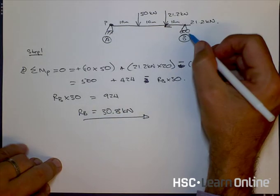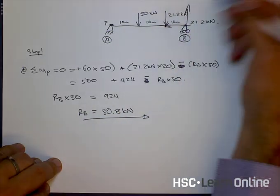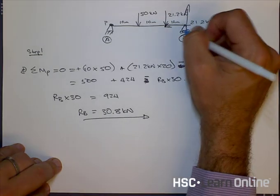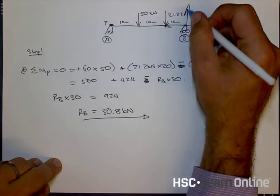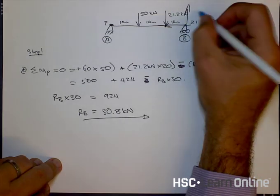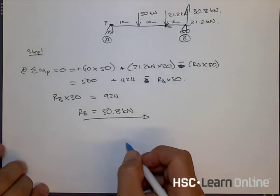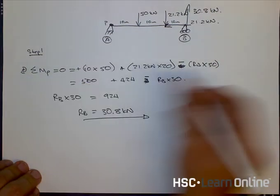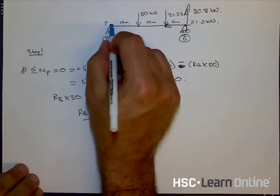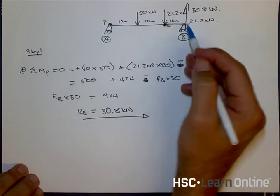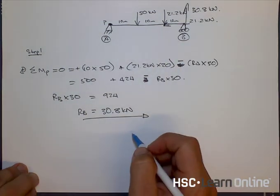So that's showing us that the resultant force over here, RB, because it's a rolling support, there's only one vertical reaction, is 30.8 kilonewtons. What we can do now is instead of using moments to do the rest of the calculation, we can calculate the reaction at RA using sum of vertical and horizontal forces.